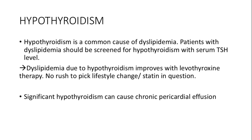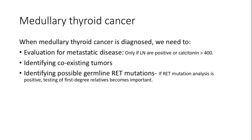Significant hypothyroidism may lead to chronic pericardial effusion. When diagnosing medullary thyroid cancer, it's important to evaluate for metastatic disease if even a single lymph node is identified or calcitonin is more than 400. Also checking for RET mutation and coexisting tumors is needed.